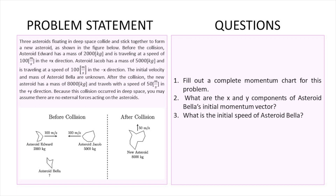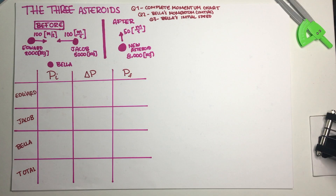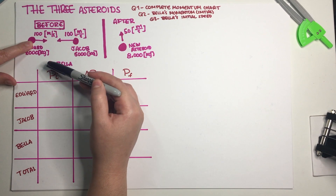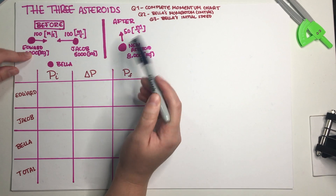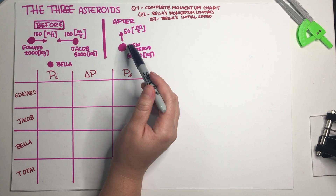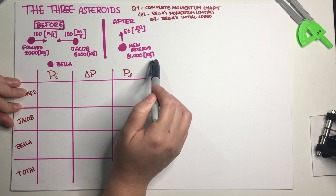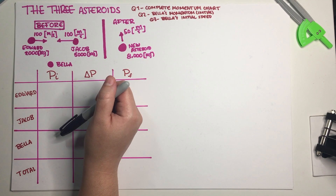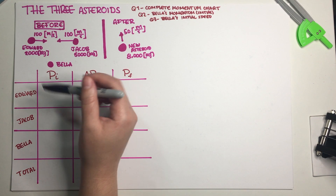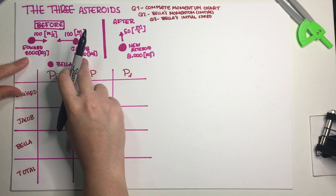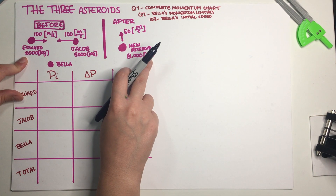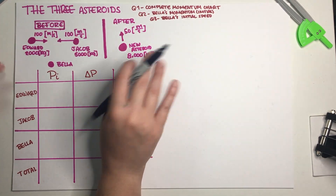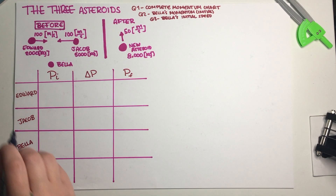What we have to do is: (a) fill out a complete momentum chart for this problem, (b) figure out the x and y components of asteroid Bella's initial momentum vector, and (c) figure out the initial speed of asteroid Bella. I've written all the relevant information in my notes — the before and after collision pictures. Before the collision we have three separate asteroids: Edward, Jacob, and Bella. We can figure out Bella's mass because Edward plus Jacob plus Bella must total 8000 kg, so Bella has a mass of 1000 kg.